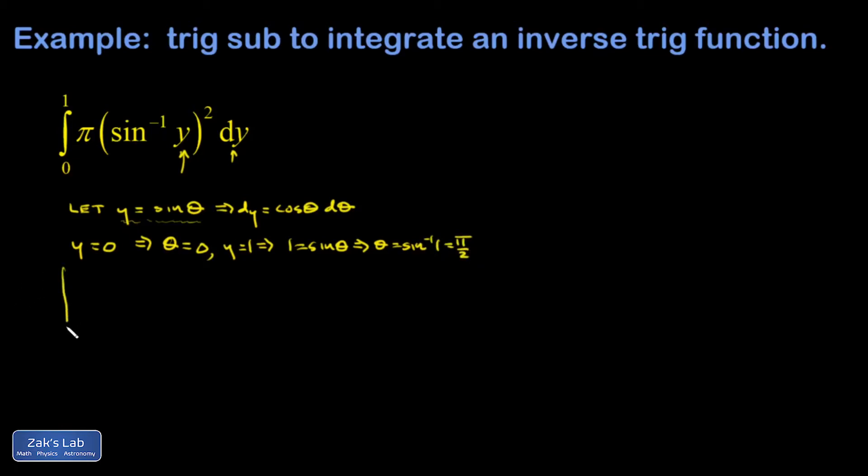I've now transformed this integral into a theta integral from zero to pi over two. I'll pull the factor of pi out in front. Then I have the inverse sine of the sine of theta, which is just theta squared. And dy is cosine theta d theta.